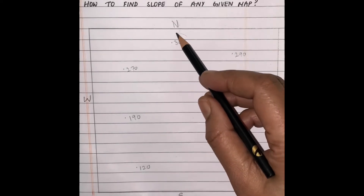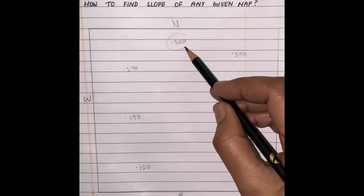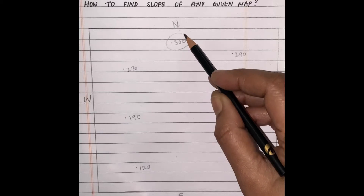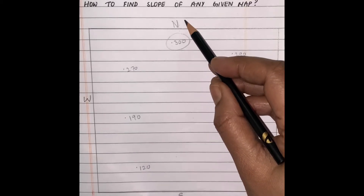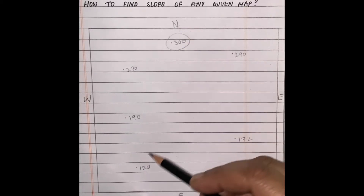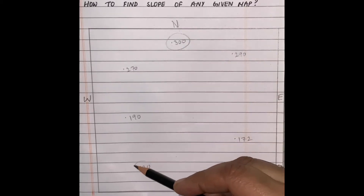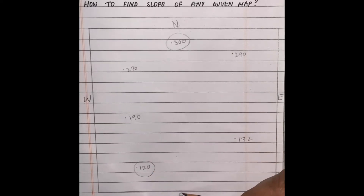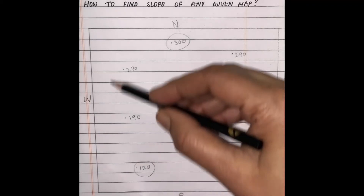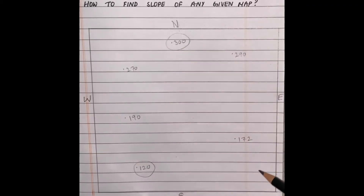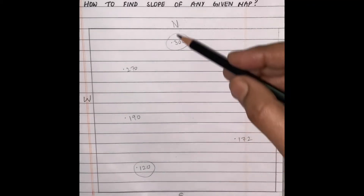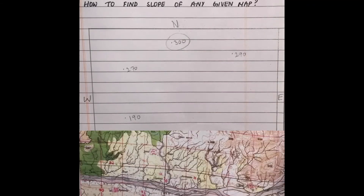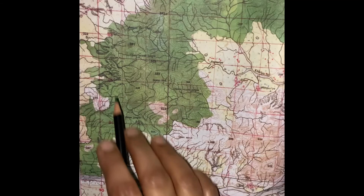Here in my drawing you will find the highest spot height, 300, in the north and the lowest spot height, 120, in the south. So the answer is clear that the slope of this particular given drawing is from north to south.